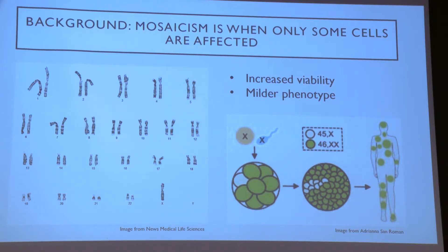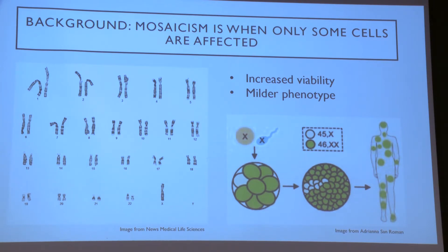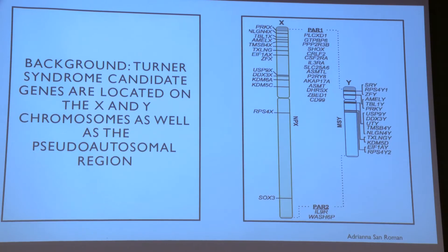Just to recap, the left side is a karyotype analysis of someone with Turner Syndrome, showing 45 chromosomes instead of 46. That's what Turner Syndrome is. As you can imagine, that loss of one sex chromosome affects multiple genes at once.